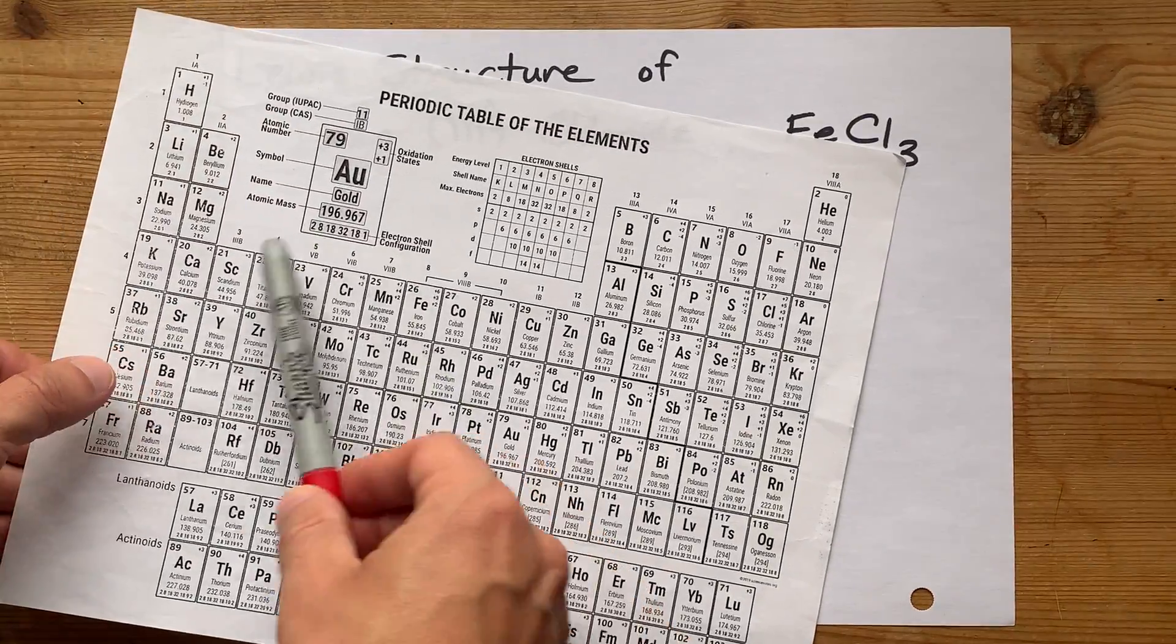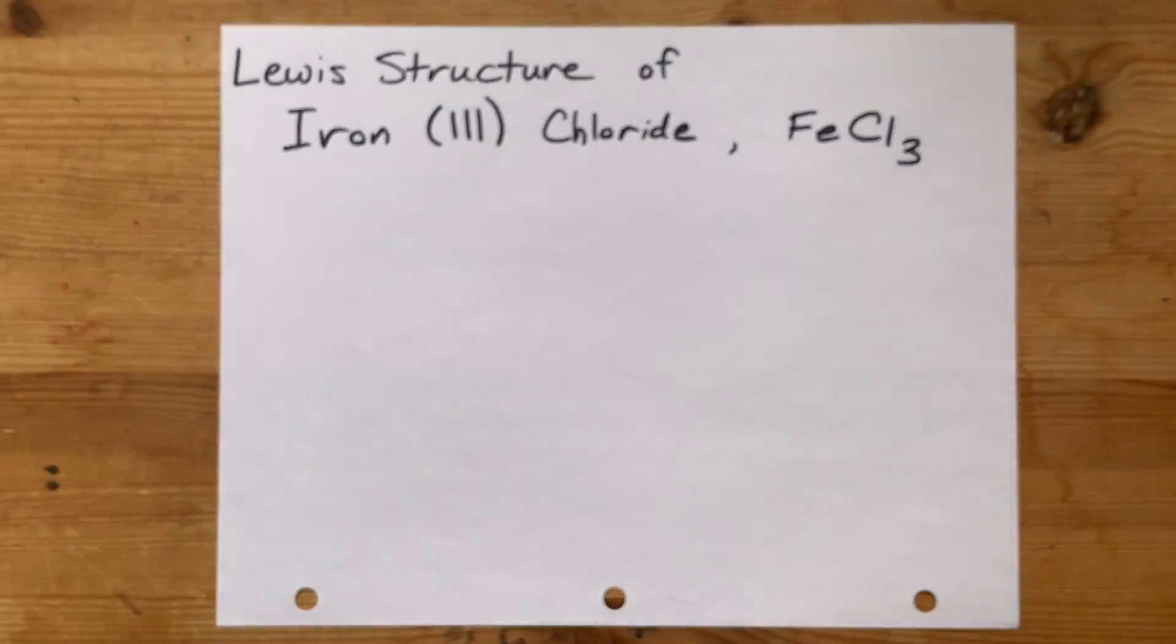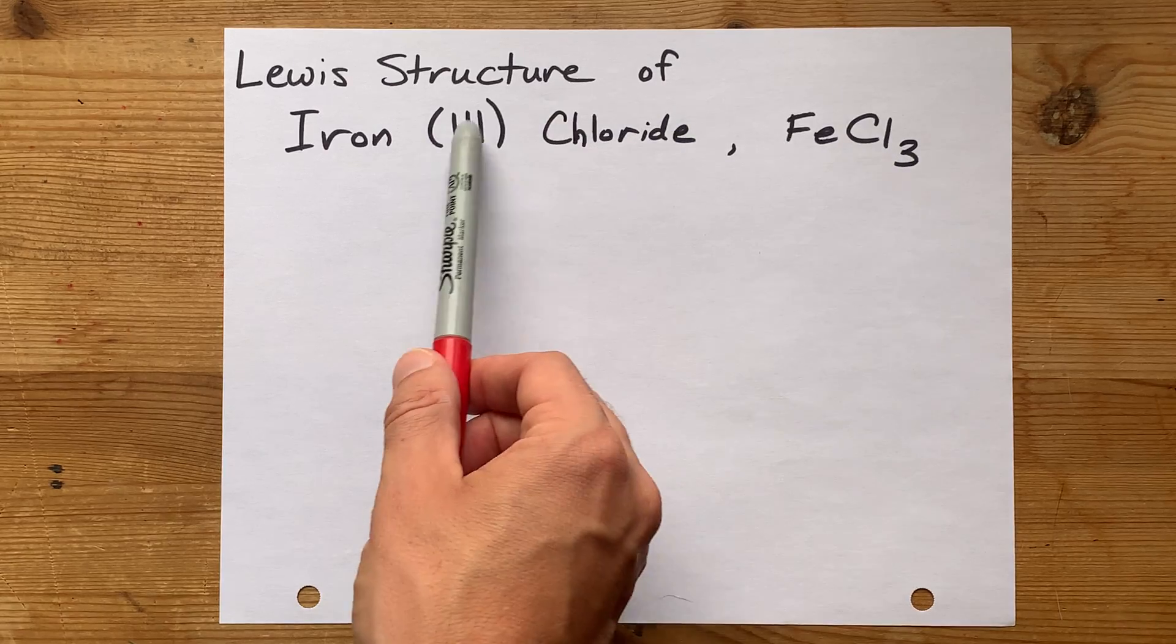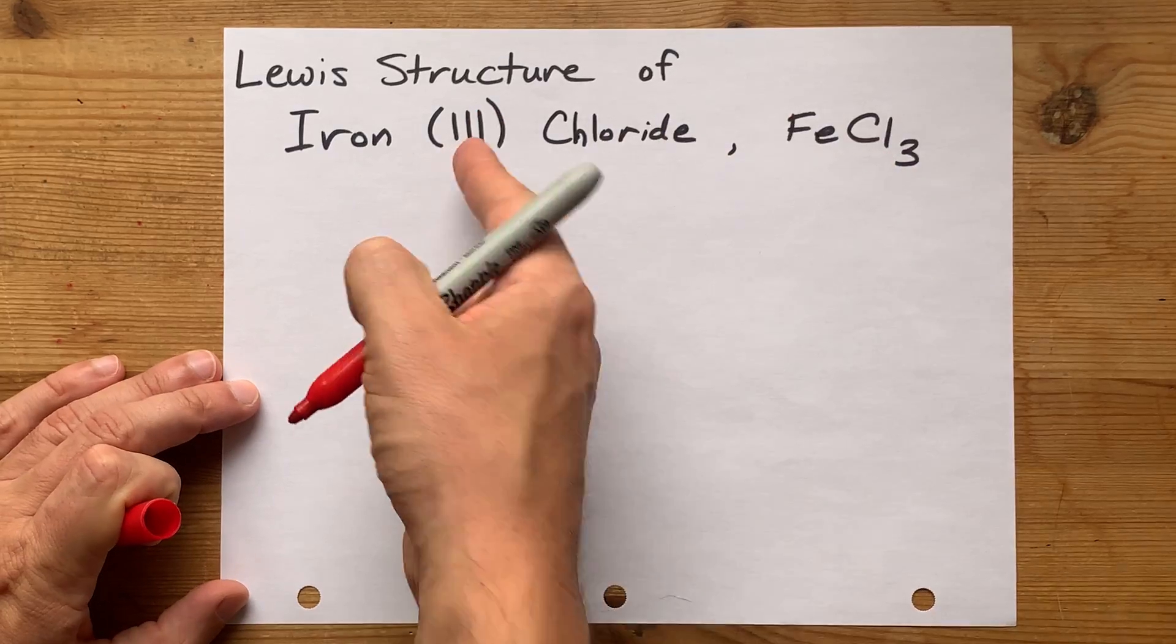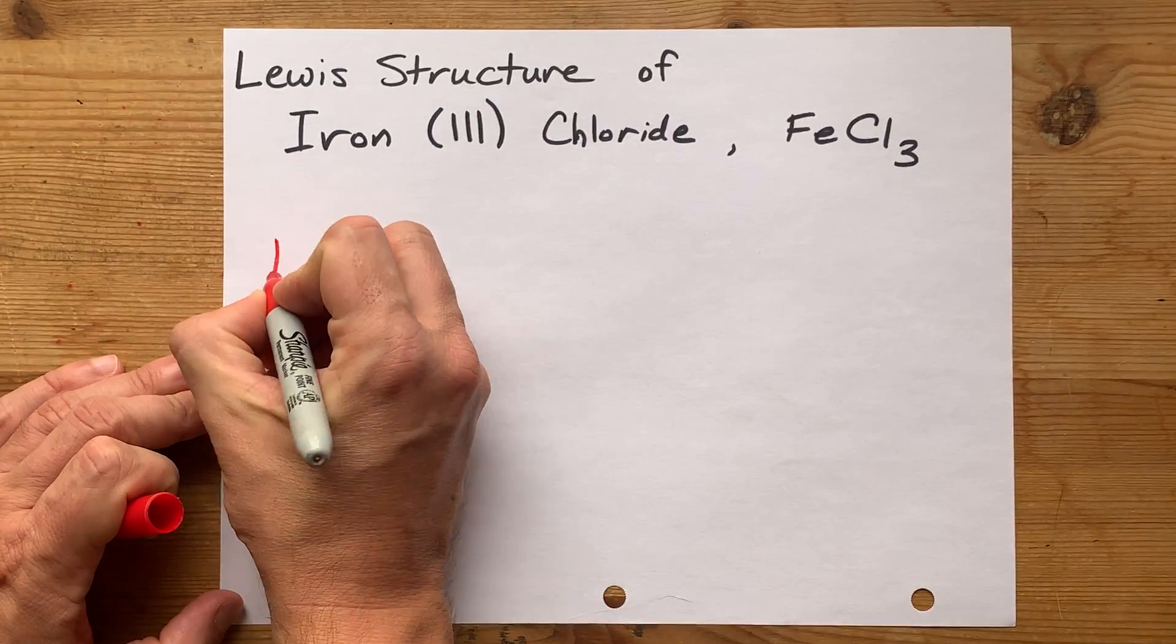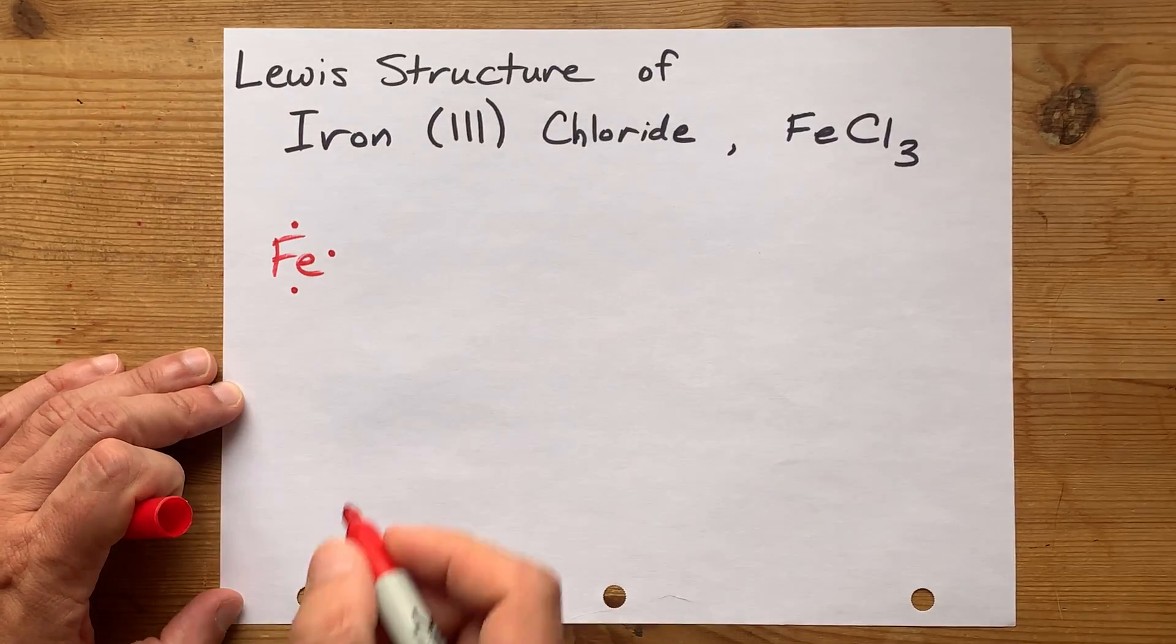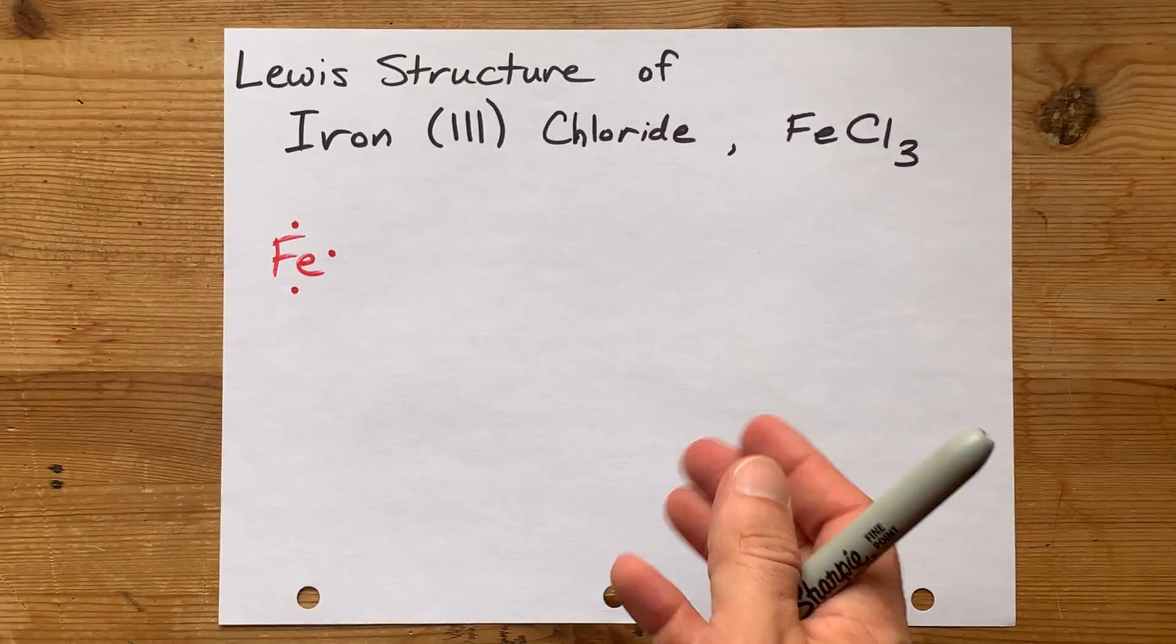Iron is a metal from the transition metal block of the periodic table. It can have multiple charges. So I want you to look at the formula or the name and tell me what the charge of iron is. If you said it was plus 3, you're correct. And I want you to start with Fe having three dots around it. The loss of those three electrons will give it the charge of plus 3.